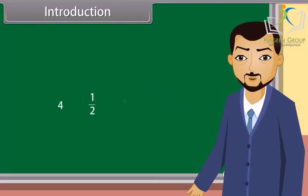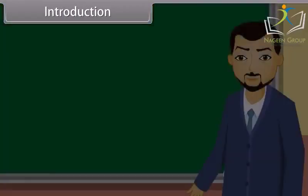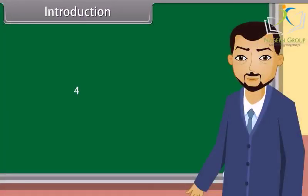Look at these numbers. Do you know what we call these numbers? These are the real numbers. Teacher, is an irrational number also a real number? Yes, an irrational number is also a real number. A rational number or an irrational number is called a real number. Today we will learn more about rational as well as irrational numbers.